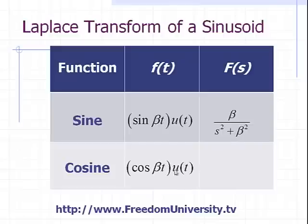And for the cosine function, cosine beta t multiplied by the step function u(t), which makes this function causal, we have s divided by s squared plus beta squared, where we have the denominator to be the same. And the only difference is in the numerator, where the sine has a beta term, and the cosine in the numerator has an s term for the Laplace transform.